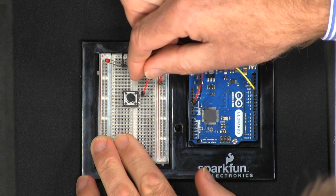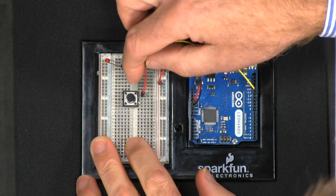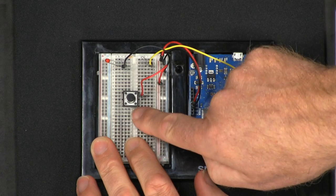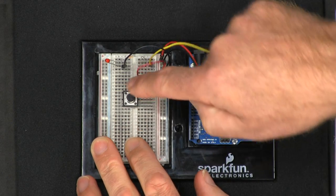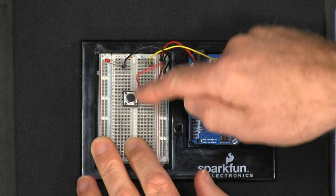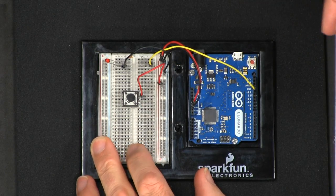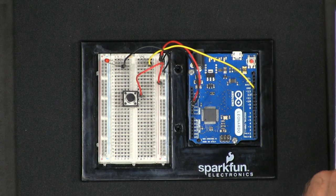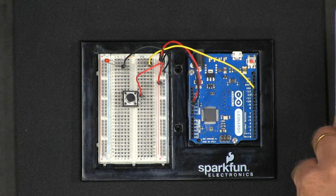So the switch has four pins on it. The pins on this side are both connected together and the pins on this side are both connected together, but when you press the switch then all four pins are connected together.